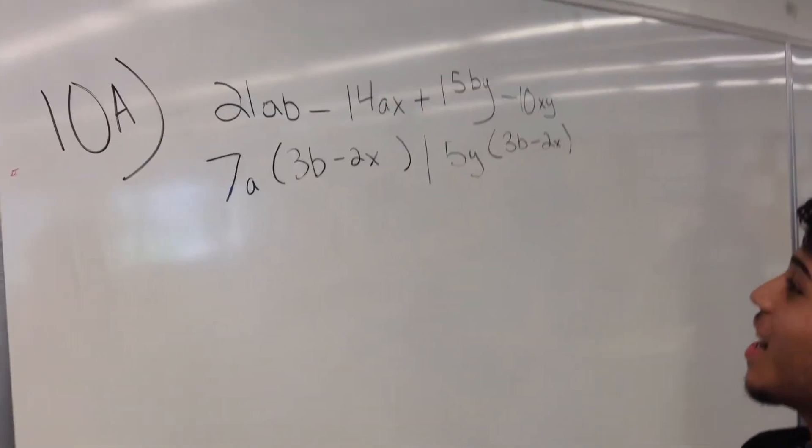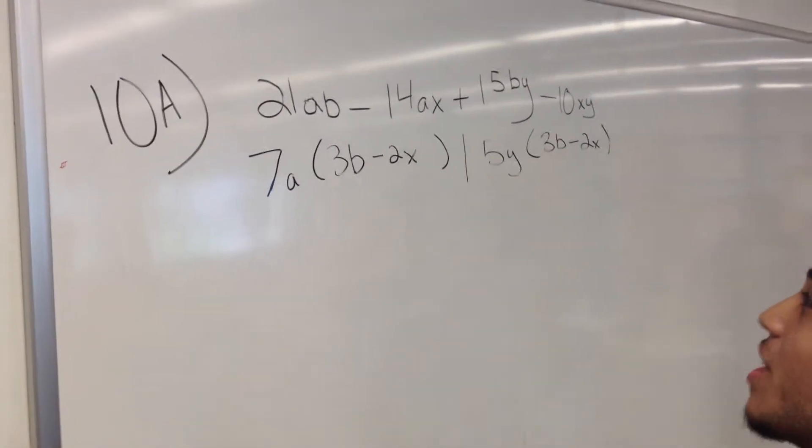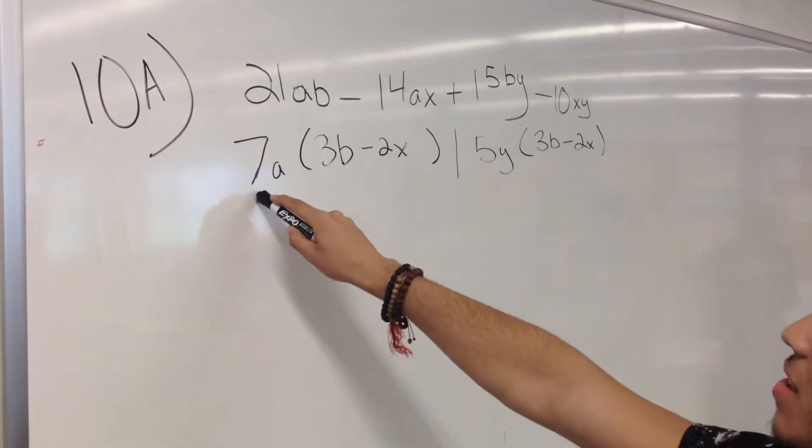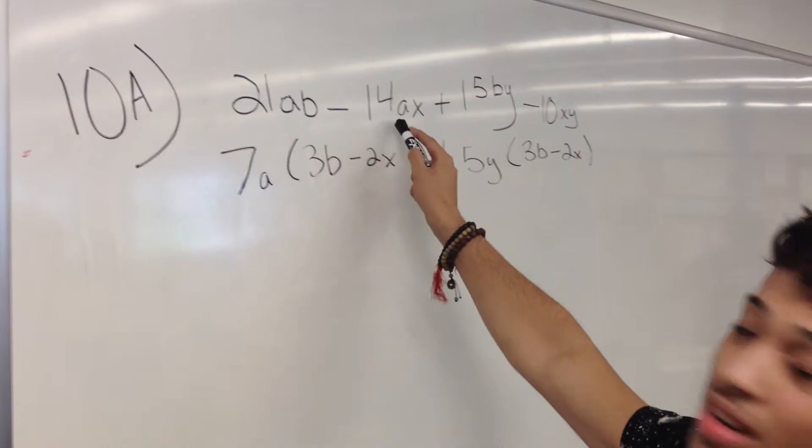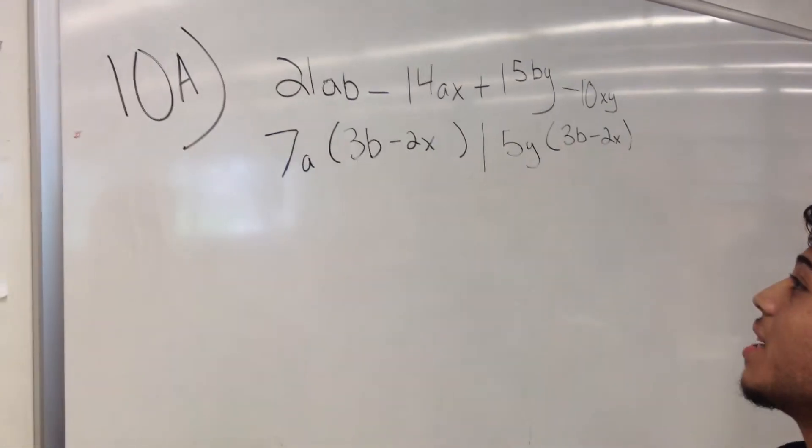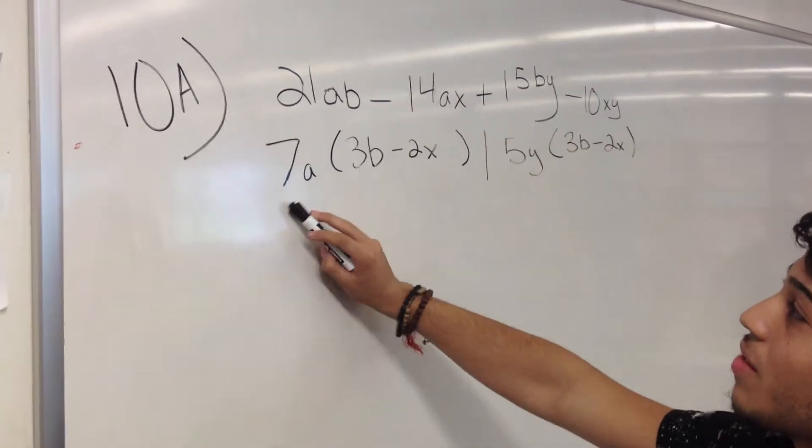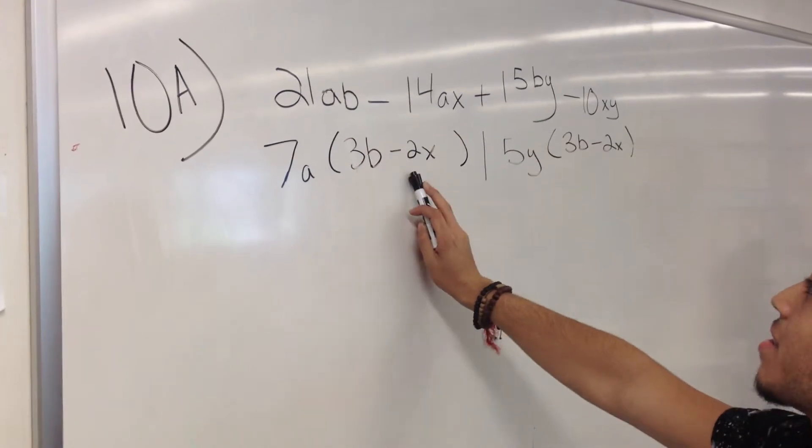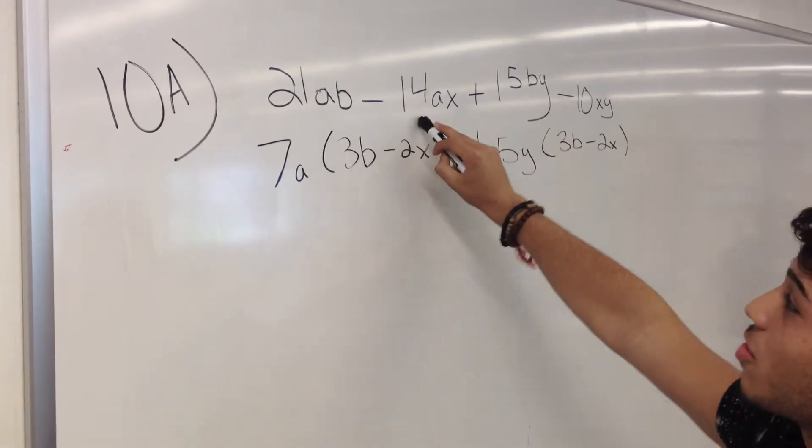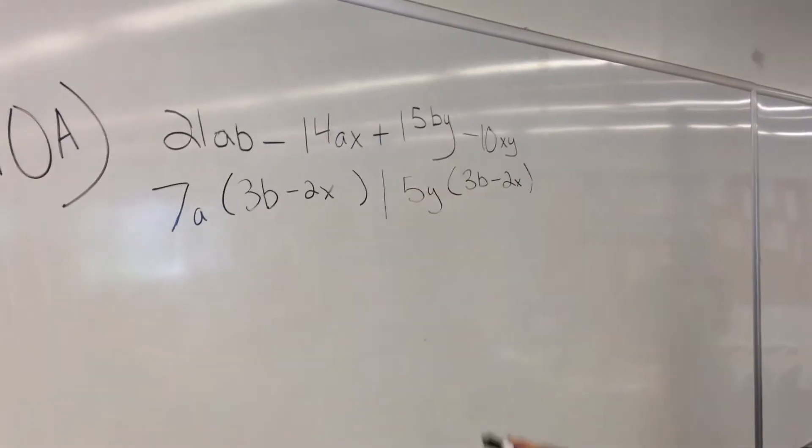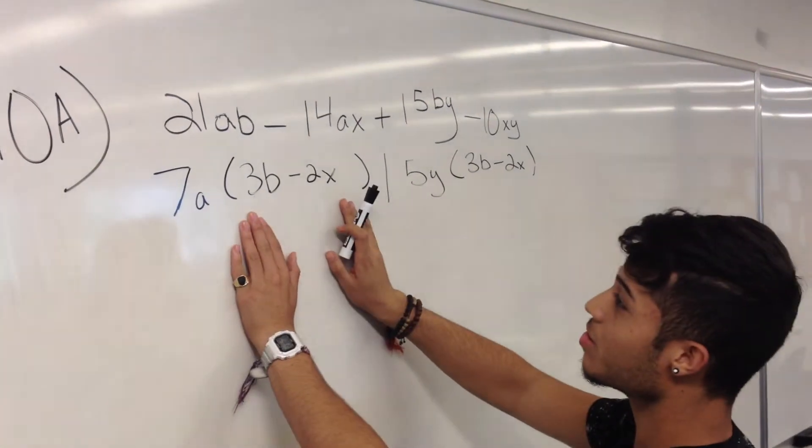Then I factor. I know that 7 goes into 21 and 14, so that's one factor. 7 goes into 21 three times, so that's 3B. Minus, 7 goes into 14 two times, and you're left with 2X. So I know that this is going to be one factor.